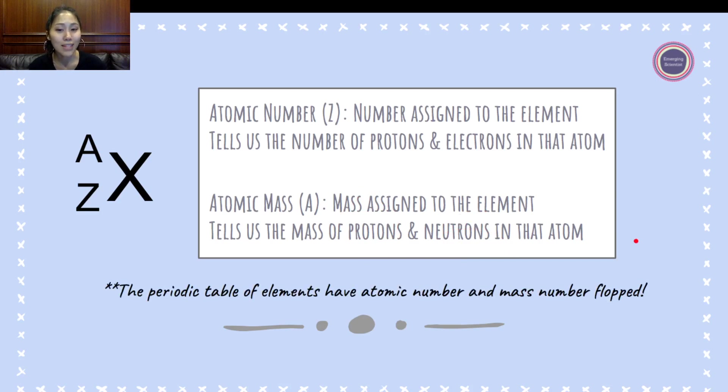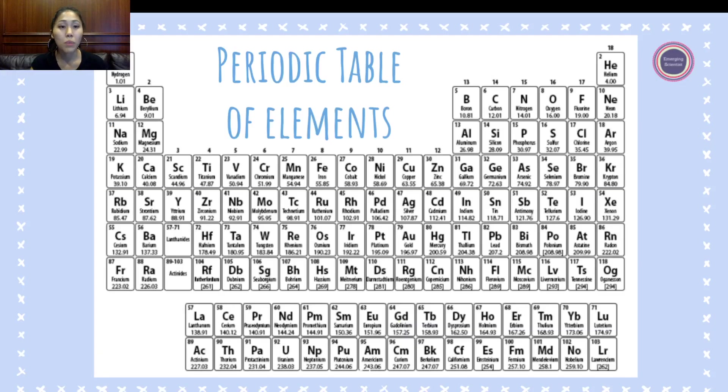The periodic table of elements have atomic number and mass number flipped. On the periodic table, the mass number is on the bottom and the atomic number is on the top. So here's another counterintuitive piece for you. The periodic table of elements, the top left-hand corner, that's the atomic number. The bottom number is the mass number. The X is the element, so every single element is a different symbol on the periodic table.